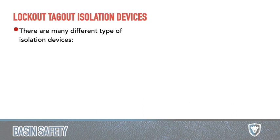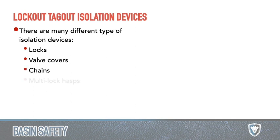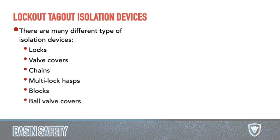There are lots of different types of LOTO devices. Multi-lock hasps allow multiple people to lock out — that's the upper left image. Other devices include valve covers, chains, blocks, ball valve covers, piping blanks — you can see a piping blank example in the upper right — another multi-lock hasp in a triangle shape for a ball valve, and a cord cover on the bottom right.